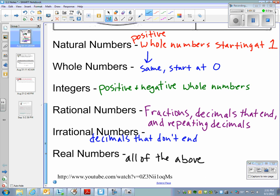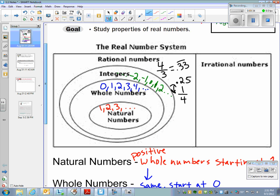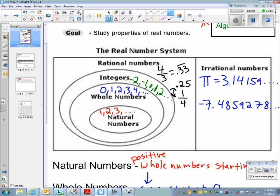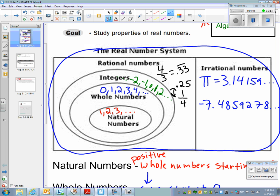Finally, irrational numbers are decimals that don't end. An example would be pi. It goes on forever. 3.14159 forever. Otherwise, we can make up a number, favorite number, 7.4859278, and keep making up numbers for the rest of eternity. Those are the irrational numbers. And what the real number system is, it's all of these things.